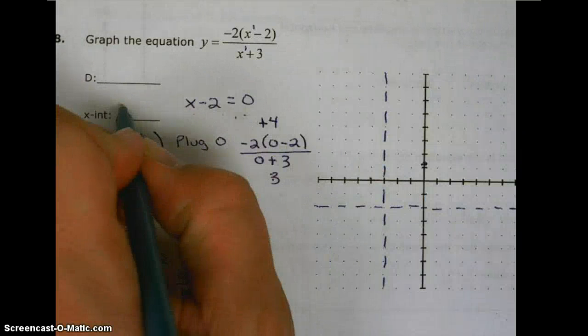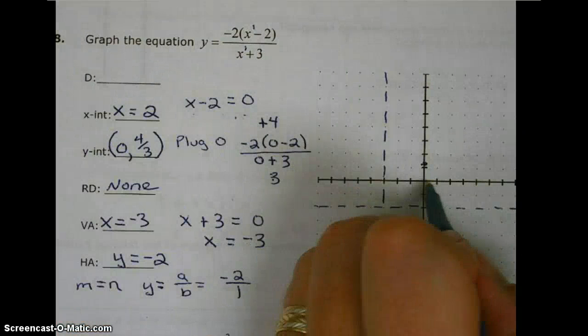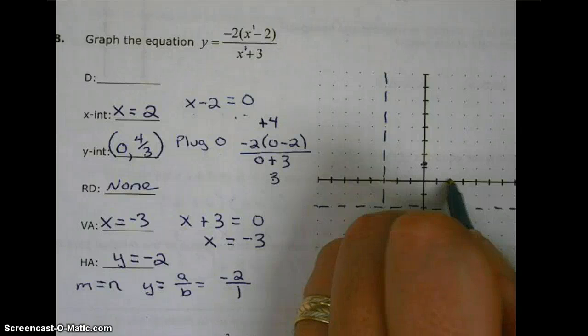So that means that x equals 2. So at x equals 2, that's an x-intercept. That's where the graph is going to cross.